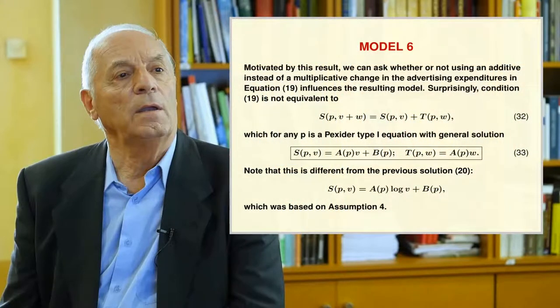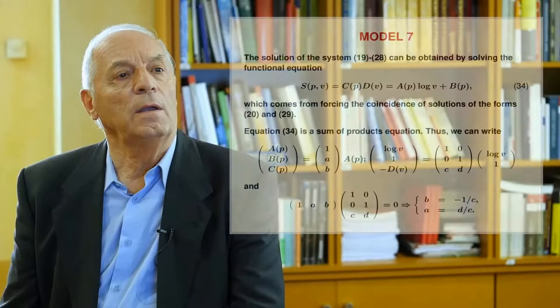Model 6 asks whether using an additive instead of multiplicative change in advertising expenditures in equation 19 influences the result. Surprisingly, condition 19 is not equivalent to equation 32, which for any Pi is a Pexider type 1 equation with general solution in 33 — different from the previous solution 20 based on Assumption 4.